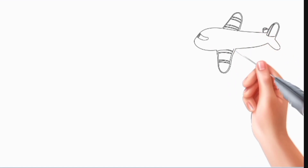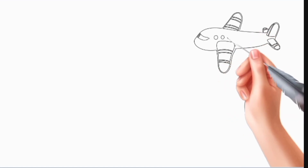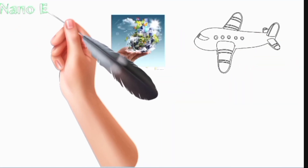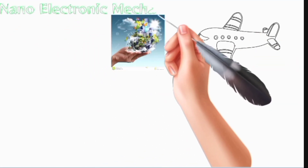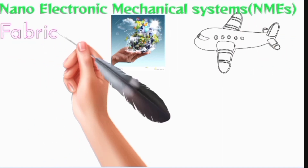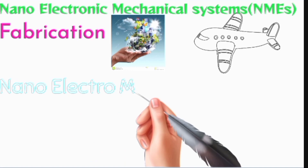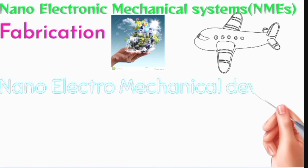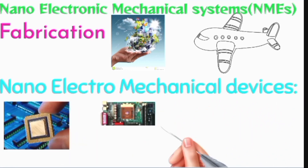We are living in the Nano-Electronic World. I am going to talk about Nano-Electro-Mechanical System, NEMS — A Fabrication System. We all know about Nano-Electro-Mechanical Devices, for example chips and computer motherboards. In Nano-Electro-Mechanical Devices, the fabrication method can be used, so it is called Nano-Electro-Mechanical System.